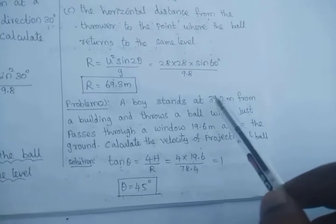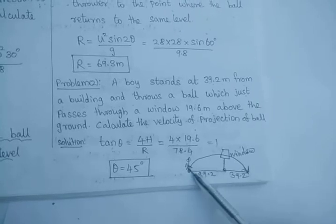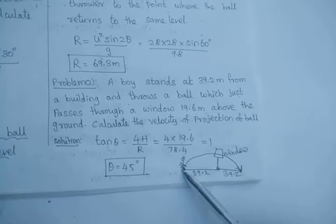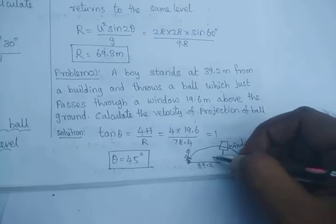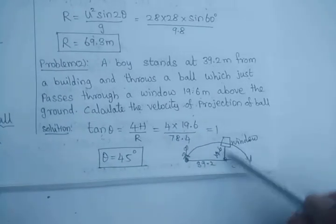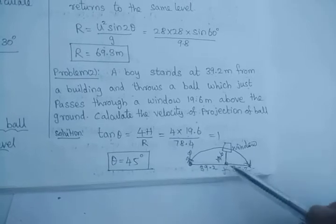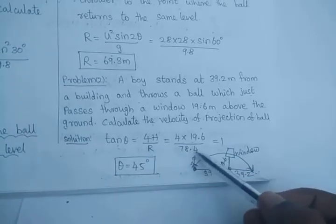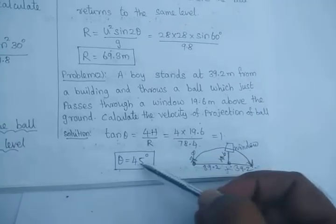How do we take the range as 78.4? A boy stands 39.2 meters from the building — the ball travels 39.2 meters to the building, and the building is at the midpoint of the trajectory, so total range is 39.2 + 39.2 = 78.4. Substituting, tan θ = 1, and the angle at which tan θ equals 1 is 45 degrees.